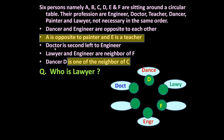Now let us again go through the statements we underlined. A is opposite to painter — we don't know where painter is, this side or that side. And E is a teacher, so teacher will occupy this position or this position. Now E cannot be here because F is there; E cannot be lawyer here; E cannot be dancer D; E cannot be doctor. E is a teacher, so E will occupy the teacher position and is placed here.